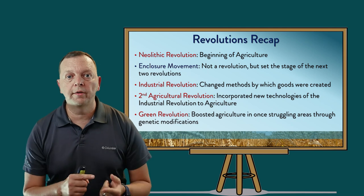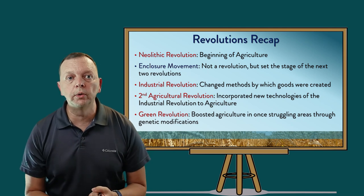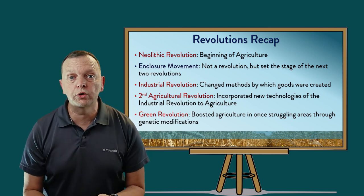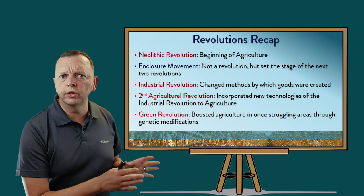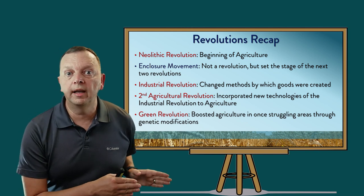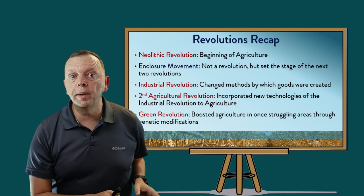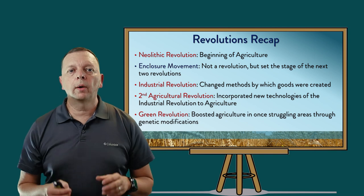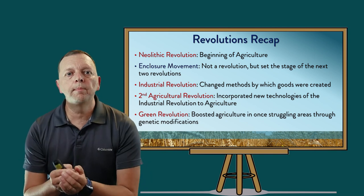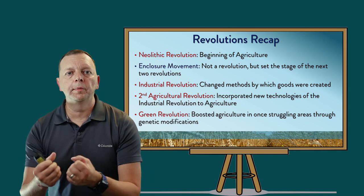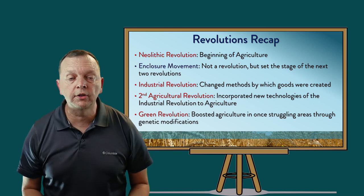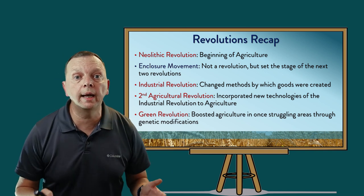We've talked about four revolutions: the Neolithic Revolution, the Industrial Revolution, the Second Agricultural Revolution that was largely started by the Enclosure Movement, and the Green Revolution. In each of these, we found better and better ways to get food and produce products. And this meant we had a great deal of trade and an economy.